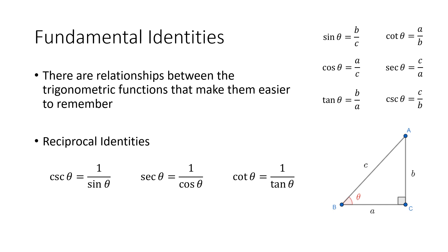One of the things we might notice is that there's a relationship between sine and cosecant, between secant and cosine, and between cotangent and tangent, which are all reciprocal relationships. And so we call these the reciprocal identities.